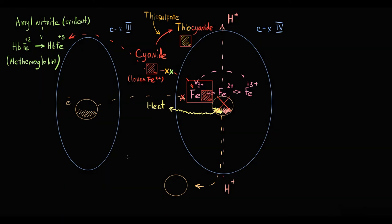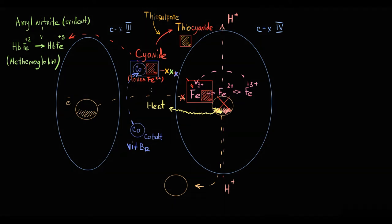And the third option is vitamin B12. The concept here is that vitamin B12 has cobalt, that loves cyanide. So, cobalt binds to cyanide, thereby preventing binding of cyanide to ferric iron in complex IV.